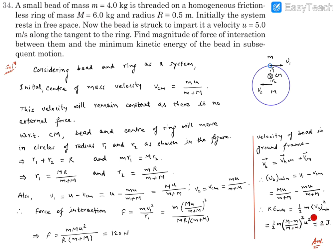So 2 joules is the minimum kinetic energy the bead will have in its subsequent motion, and the force of interaction is given by F = mMu² / [R(m + M)] = 120 N. These are our final answers.